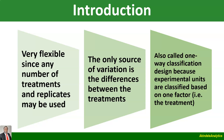This design — completely randomized design — is also called one-way classification design, because experimental units are classified based on only one factor, and that factor is the treatment. The treatment is the only basis of classifying the experimental units, and that's why another name for the design is one-way classification design.